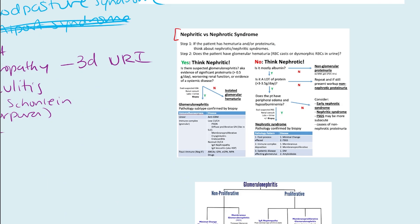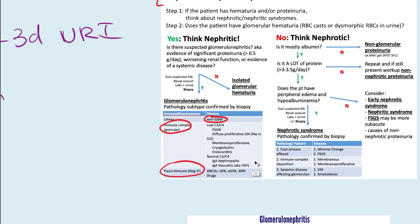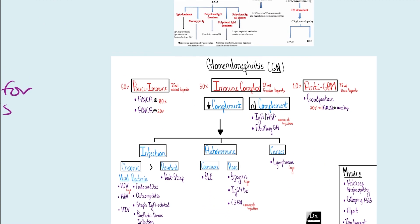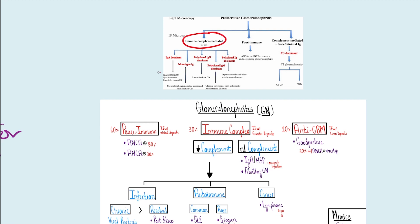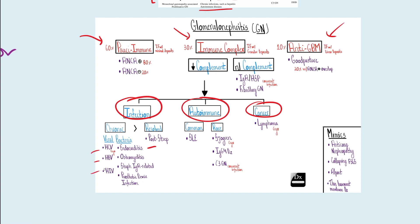You can see in these graphics that things are really classified based on anti-GBM, immune complex mediated, or pauci-immune — that's how we're doing this as well. These are great graphics from Clinical Problem Solvers. For immune complex mediated: IgA nephropathy, post-infectious glomerulonephritis, chronic infections, autoimmune diseases, and lupus nephritis. Pauci-immune includes all the ANCA vasculitides. And anti-GBM is its own category. Immune complex causes really include infectious causes, other autoimmune causes, cancers, chronic infections like viral infections, endocarditis, osteomyelitis, and post-strep glomerulonephritis.